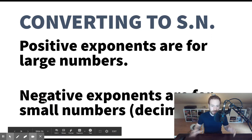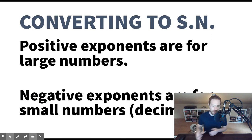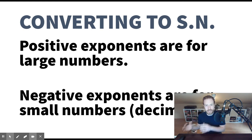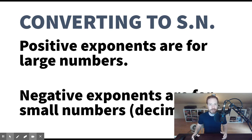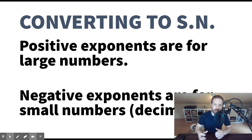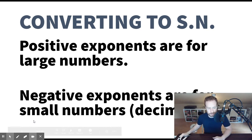Remember, positive exponents are for large numbers, negative exponents are for small numbers. This is why I like thinking of the rule in this way — it works for converting into and out of scientific notation. So if you're putting something into scientific notation and it's a big number, put a positive exponent. If you see a positive exponent on a number in scientific notation, you're going to make it a big number.